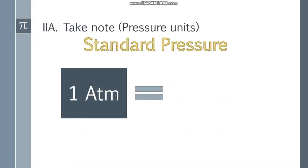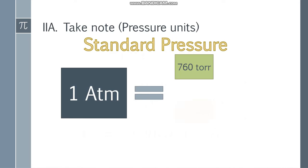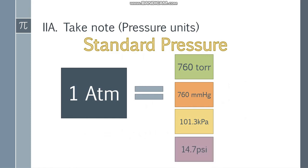Take note of pressure units. We have standard pressure: 1 atm (atmosphere) is equal to 760 torr, 760 mmHg (millimeters of mercury), 101.3 kPa (kilopascal), and 14.7 psi (pounds per square inch). All of them are equal to each other and represent standard pressure. So if the problem states 'at standard pressure,' it could be 1 atm, 760 torr, and so on.